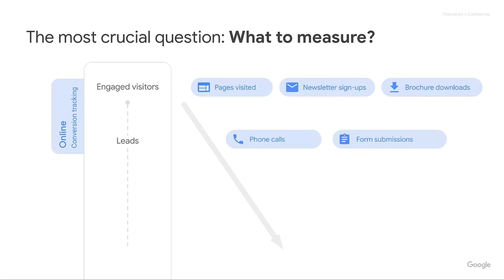This beckons the question: what do we measure? With Google Ads, we can actually measure a lot of different things. At the very top of our measurement funnel, we can look at measuring engaged visitors using the G tag or the Google Ads conversion tracking tag — measuring pages visited, newsletter signups, brochure downloads — all early signs of awareness and engagement. As we move down this measurement funnel and increase user intent, we can start measuring leads, including phone calls and form submissions, all using the same conversion tracking tag.